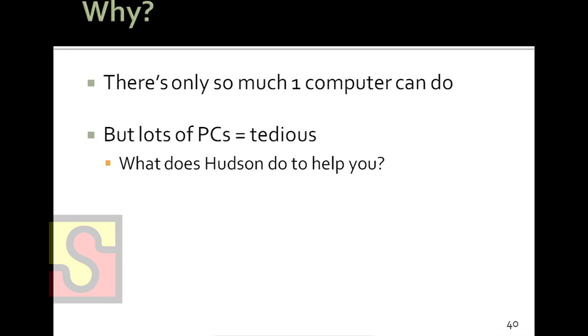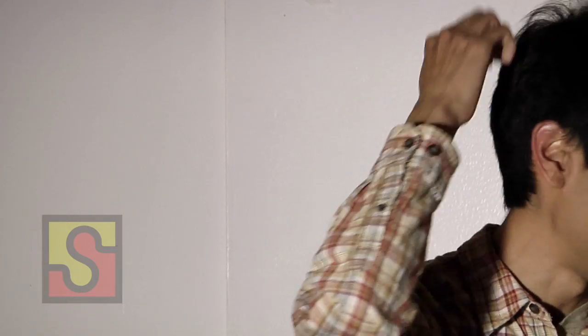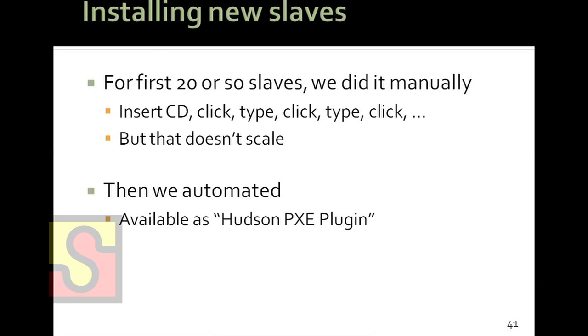The main challenge of using lots of PCs is not that it's hard, but it's just a lot of tedious grunt work. We thought about the kinds of things Hudson can help with there and implemented those. This support starts with installing new slaves — that's how we call these machines. I used to maintain a pretty big cluster of about 30 or 40 machines inside the Hudson cluster. The first 20 or so slaves, we basically installed manually.